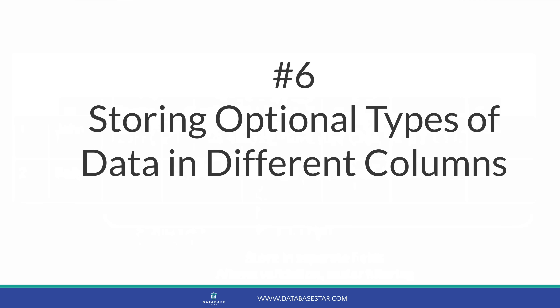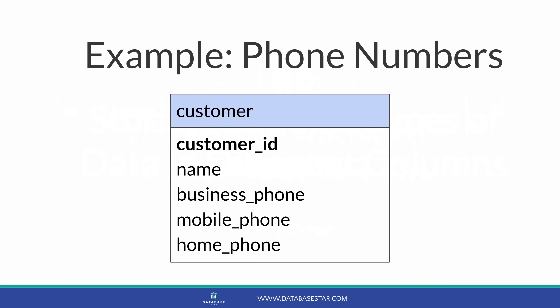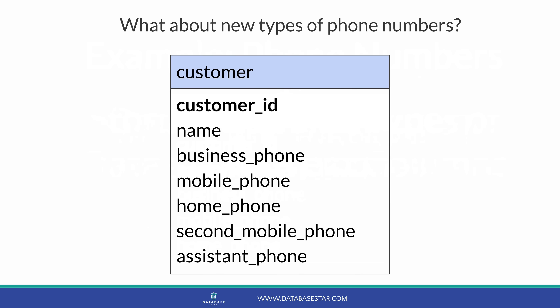Mistake number 6 is storing different optional types of data in different columns. A common example is phone numbers. If you have a customer table and want to store a business phone, mobile phone, and home phone, one approach is to add a column for each type. However, all of these fields may be optional — a customer may have only a mobile or none at all, leaving fields empty. Also, if you want to add a new phone type like a second mobile or an assistant's number, you'd have to add a new column to the table.